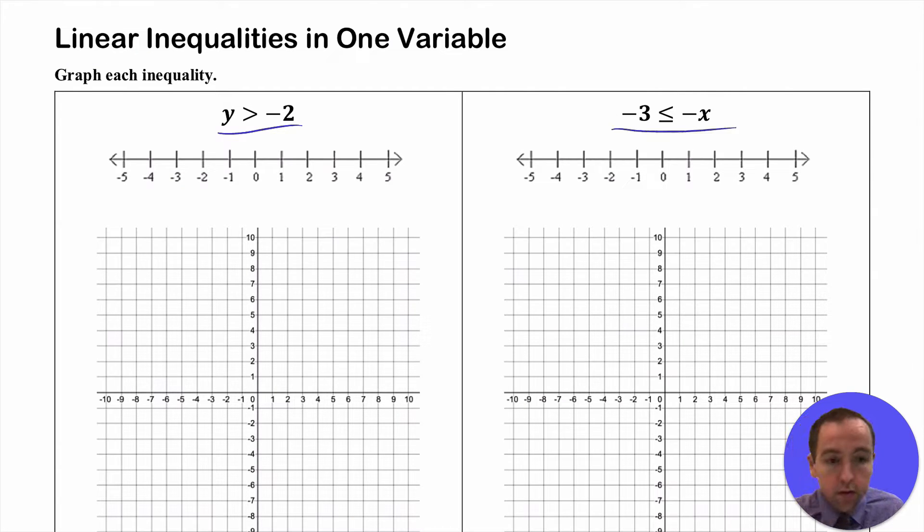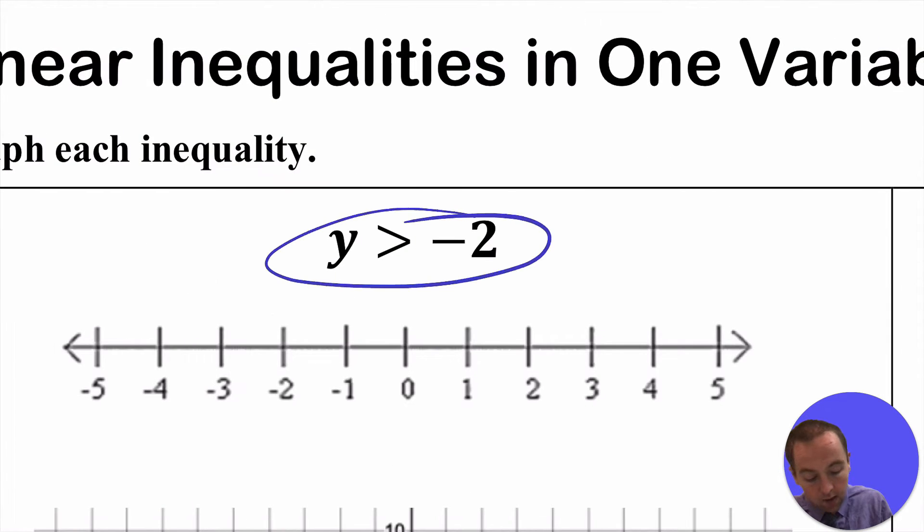You can see that both of these examples only have one variable. I've happened to pick y for the first one and then x for the other one. So if you have any sort of a relationship, it doesn't matter if it's an inequality or equals, and it just has one variable, there's only y, there's not a z or h or any other variable, then you can represent that in exactly one dimension when there's one variable.